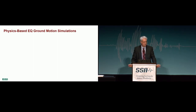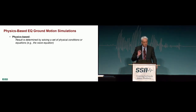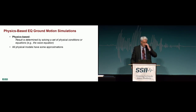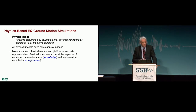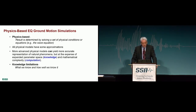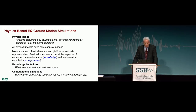This leads into what I call physics-based earthquake ground motion simulations. Physics-based means the result is determined by solving a set of physical conditions or equations — for example, the wave equation. All physical models have some level of approximation. More advanced physical models can yield more accurate representation of natural phenomena, but at the expense of expanded parameter space — that's knowledge — and mathematical complexity, that's computation. We're always battling knowledge limitations and computational limitations, including the efficiency of algorithms, computer speed, and storage requirements.